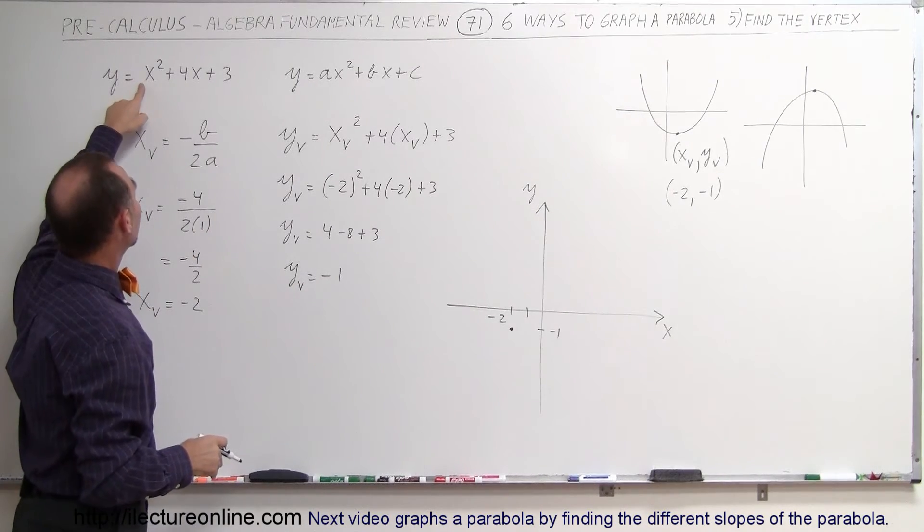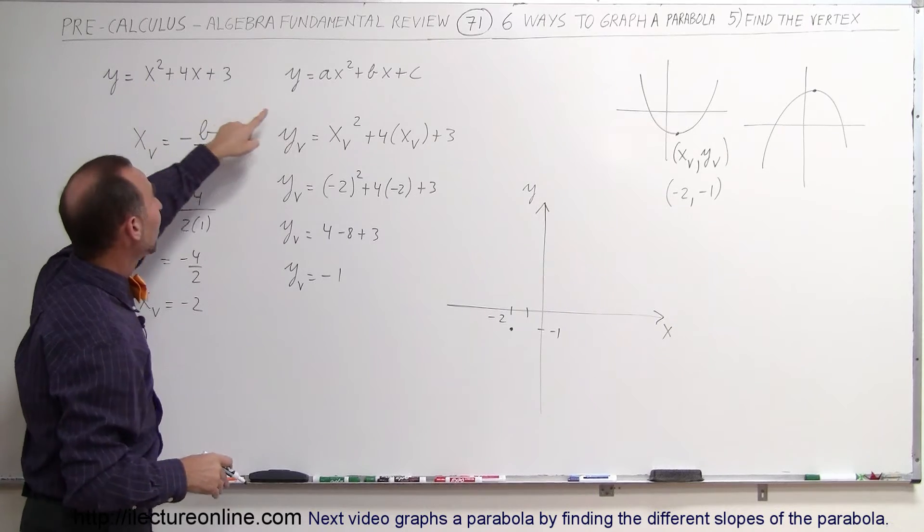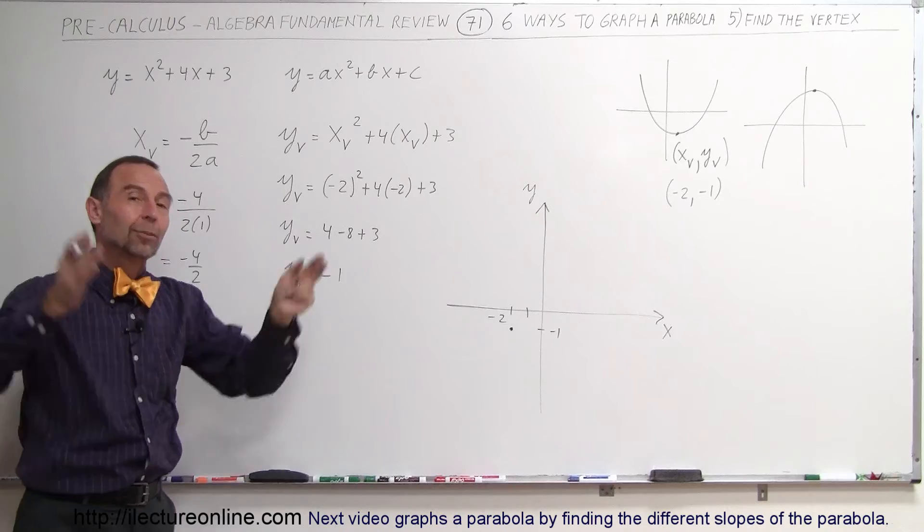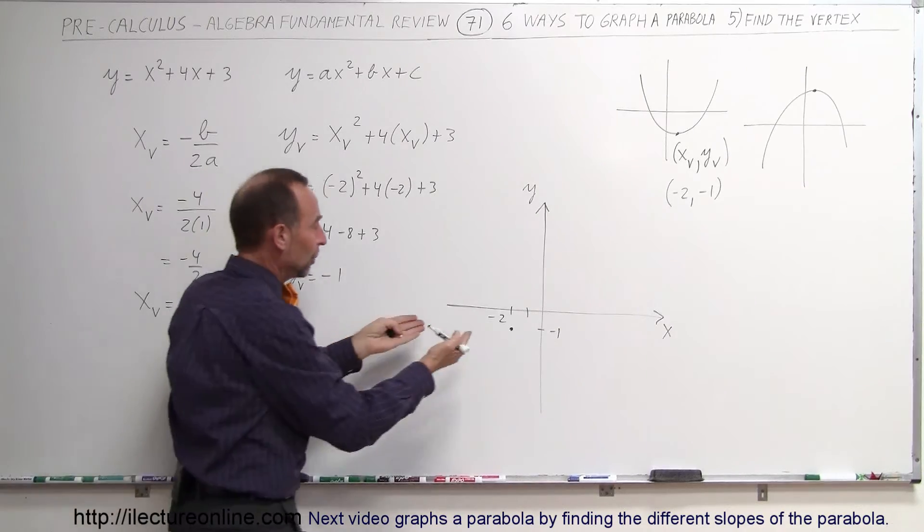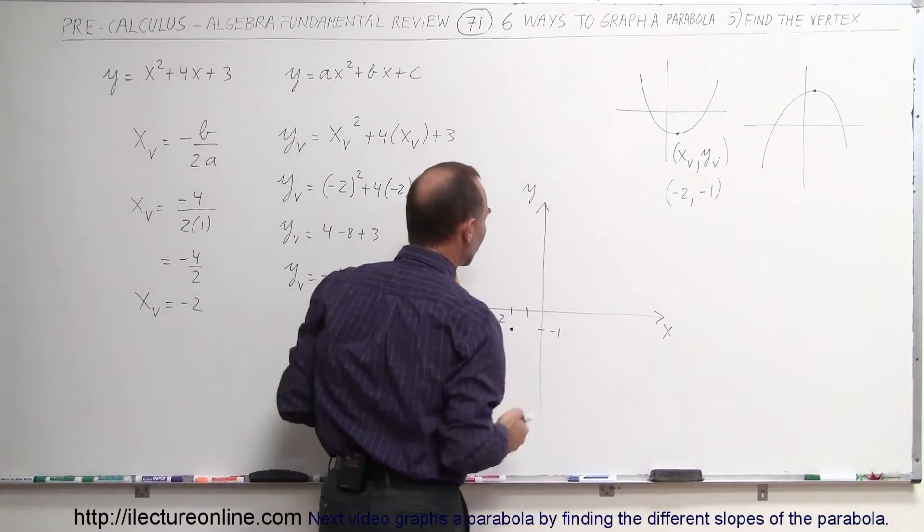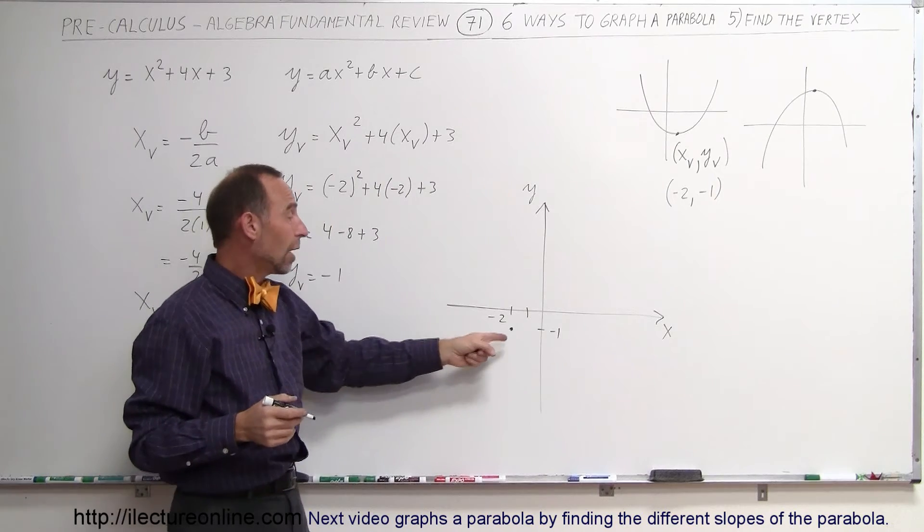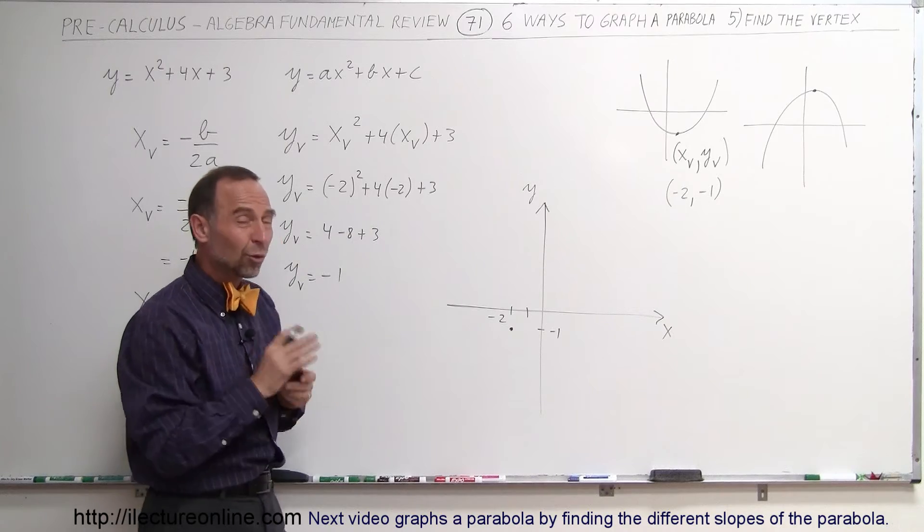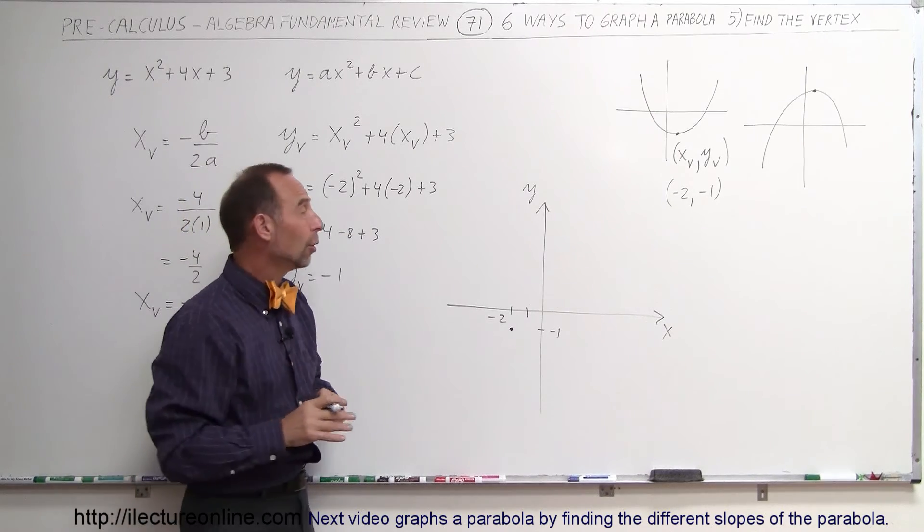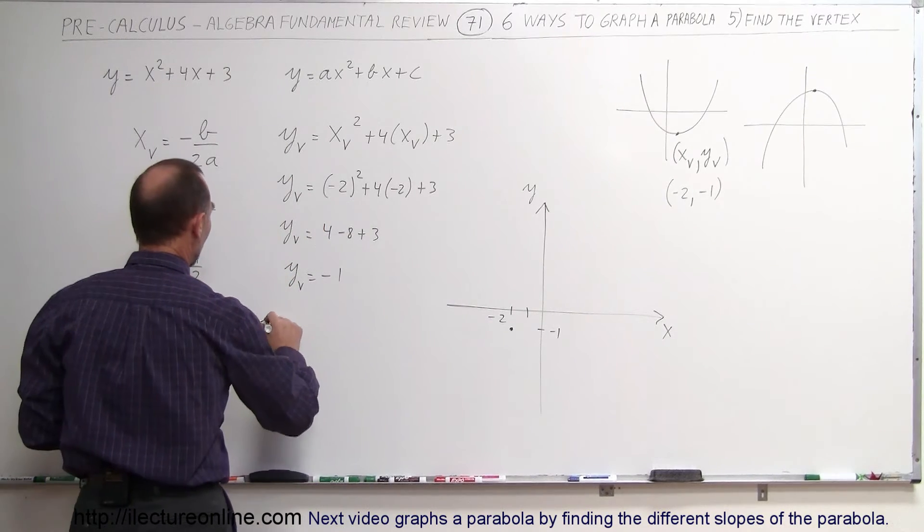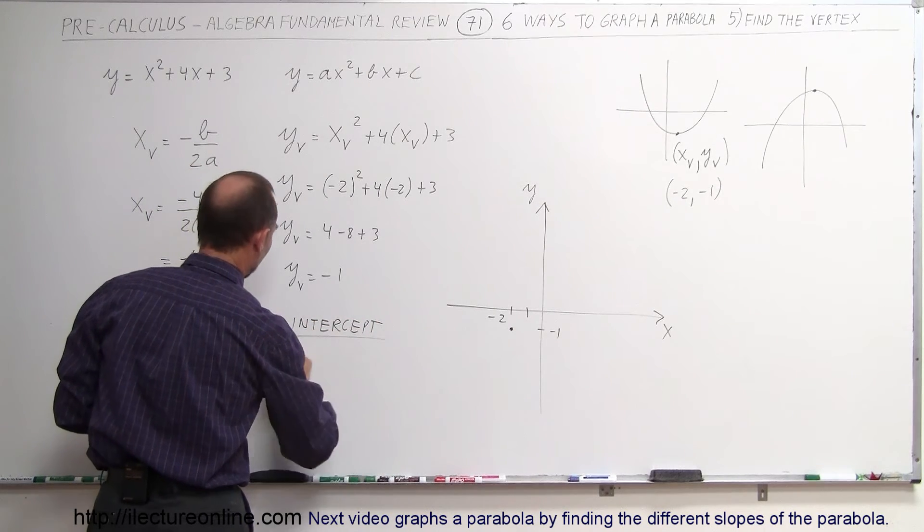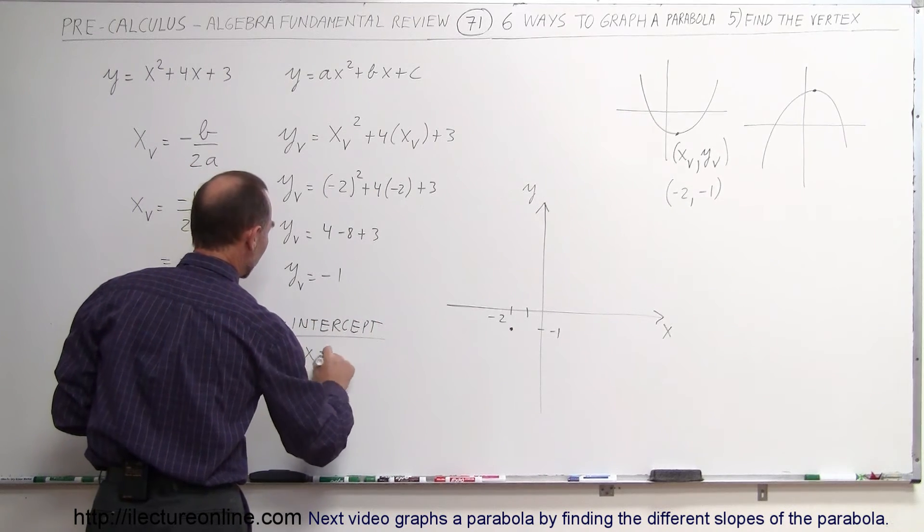Now, if I look at the coefficient in front of the x-squared term, and if that is equal to a positive number, then we know that the parabola opens upward. So now we know the parabola has to open like this, which means that it's going to cross the x-axis and it's going to cross the y-axis. Now, where it crosses the y-axis is really the easiest point to find, so we're going to find the y-intercept.